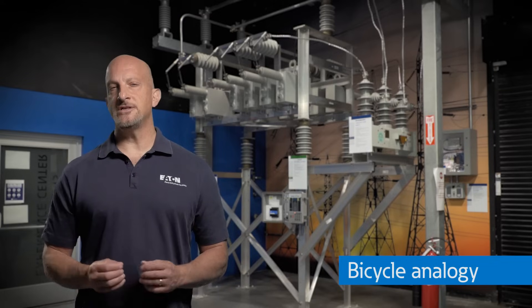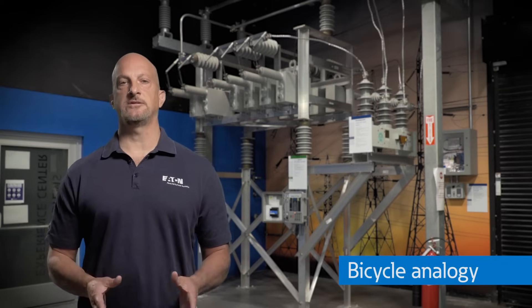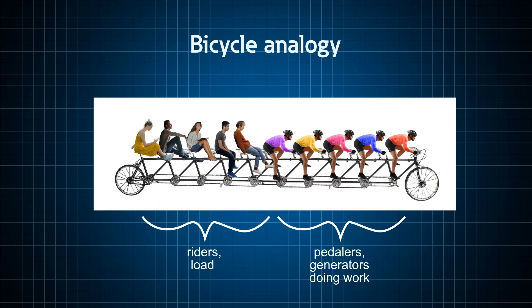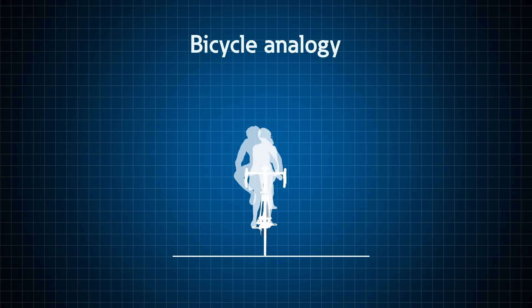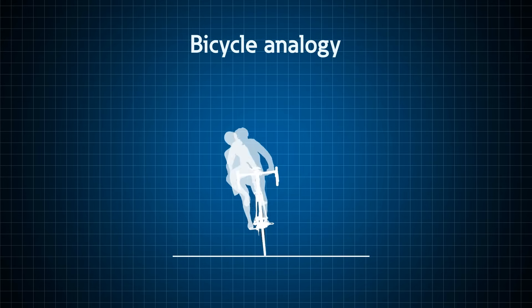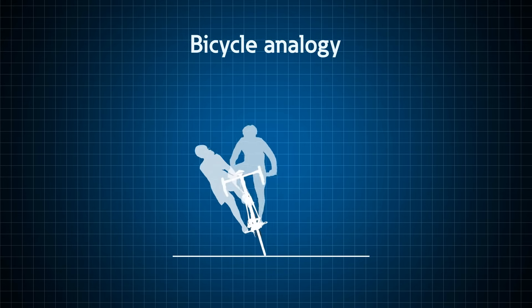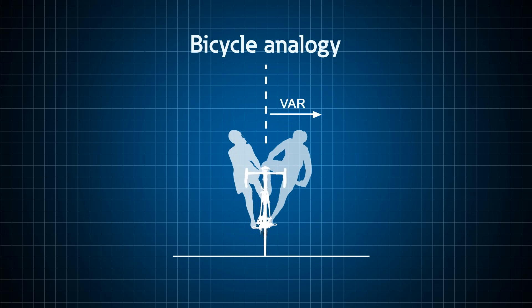The bicycle analogy is interesting. A bicycle with 10 seats has 5 people with pedals doing the work and acting like generators, and 5 of them are just riders acting like a load. The generators have to pull the loads and as long as the loads cooperate and sit up straight, the generators can just do real work moving the bike forward — this is compared to kilowatts. If the riders or loads become disruptive and lean, the generators have to lean the opposite way to compensate. This does no work but is required to keep the bike stable, and this action is compared to VARs on the power system.